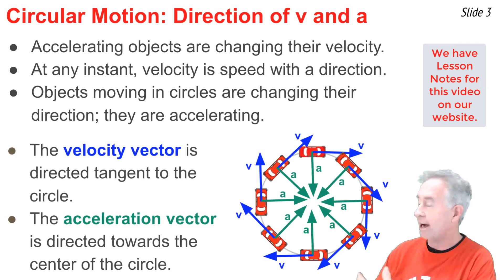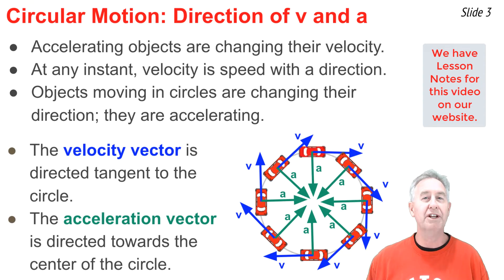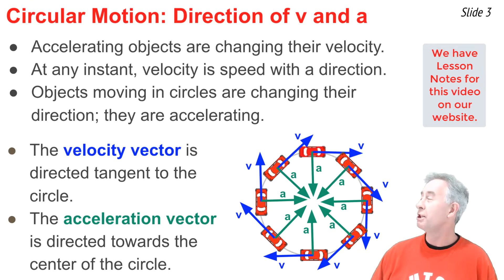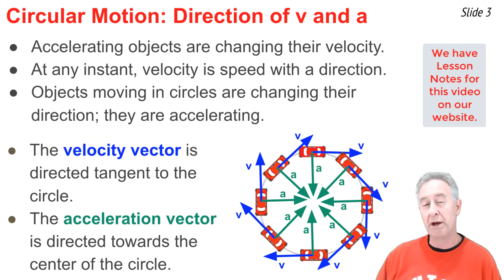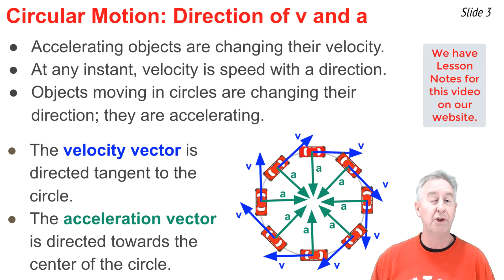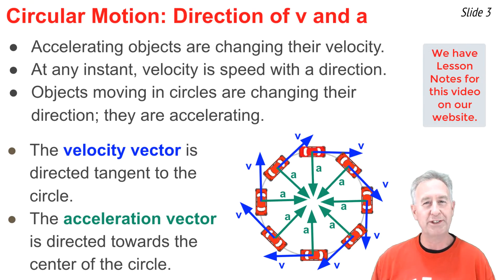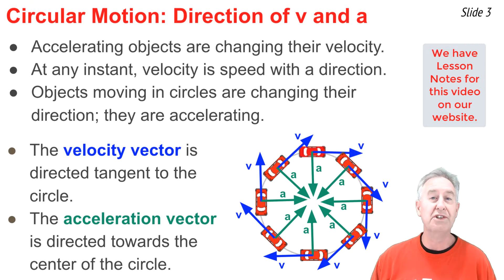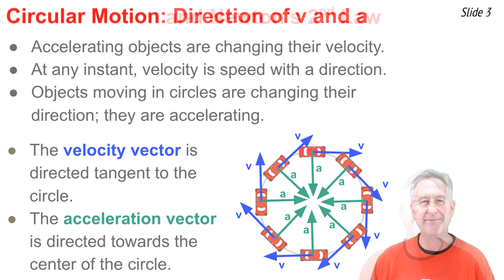Here is a top view of a car moving in a circle. You'll notice vectors placed on the car at various locations around the perimeter of the circle. The blue vectors represent the velocity vector, directed tangent to the circle. The green vectors represent the acceleration vectors, directed towards the center of the circle. We refer to this as an inward acceleration.